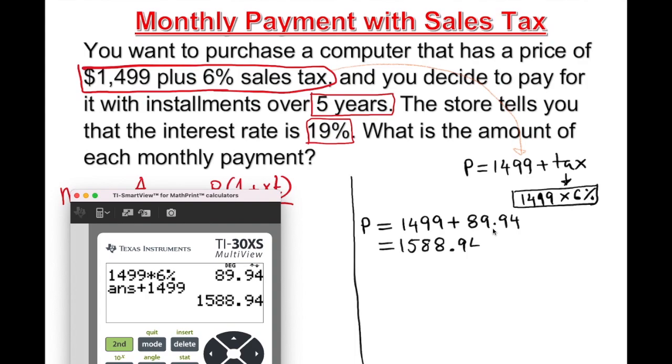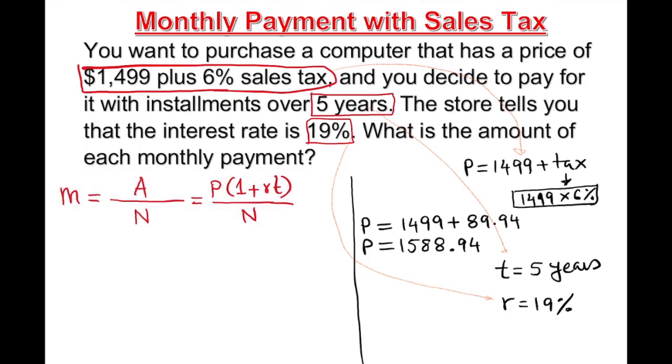Let's add them: 1,499 plus 89.94 equals 1,588.94. That's our P. Once we have our P, we need t, the years. Our t is going to be 5 years. And we know that the rate r is going to be 19%.